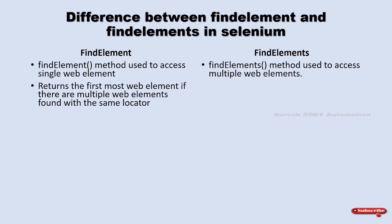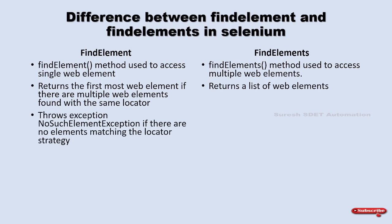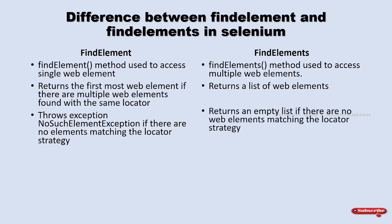If you find multiple elements with the same xpath, you will eventually use the findElements concept, which returns a list of web elements. Using a for-each or for loop, you iterate through that list. Whenever an element is unable to be located using findElement, it throws a NoSuchElementException. With findElements, it simply returns an empty list when no elements match.